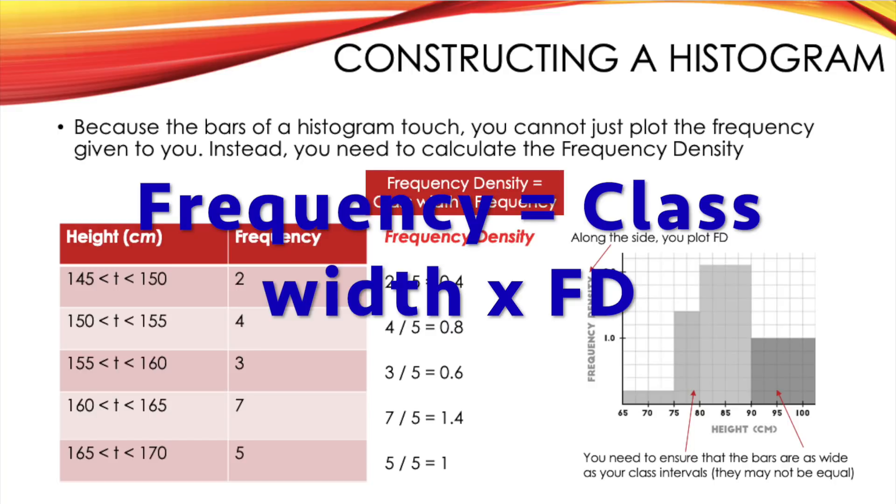the first bar has a class width of 10 and a frequency density of 0.2. You'd times these together to get a frequency of 2. The second bar has a class width of 5 and a frequency density of 1.4. You'd times these together to get a frequency of 7.